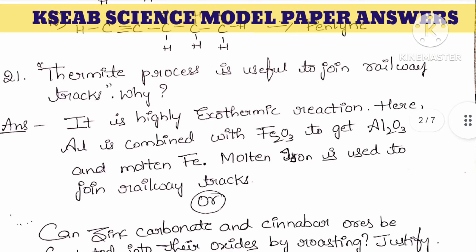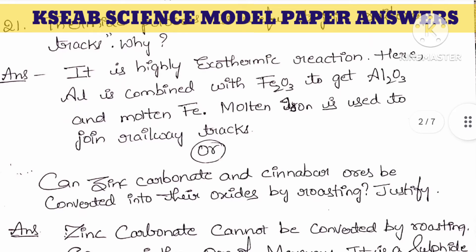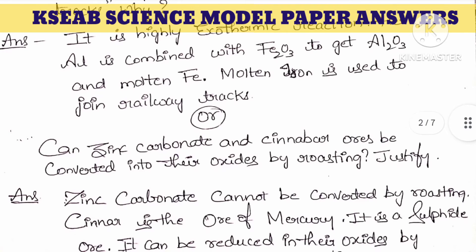21st question: thermite process is useful to join railway tracks — why? Answer: it is a highly exothermic reaction. Here, aluminium is combined with iron oxide to get aluminium oxide and molten iron, and that molten iron is used to join the railway tracks.